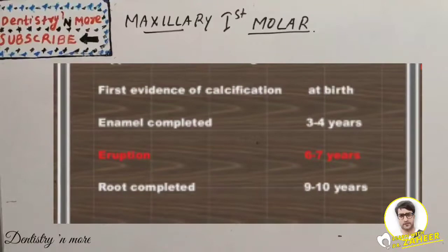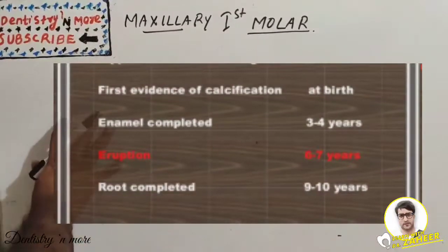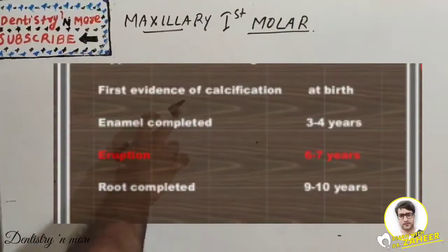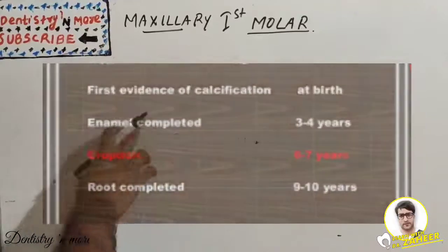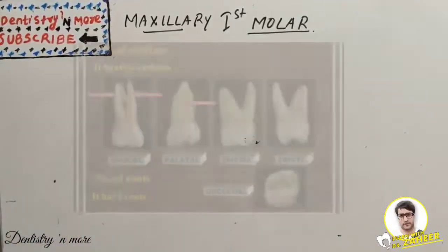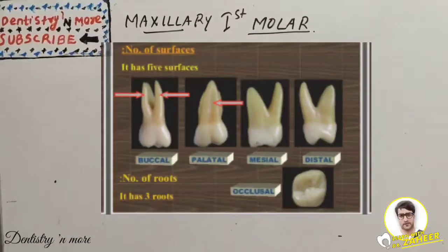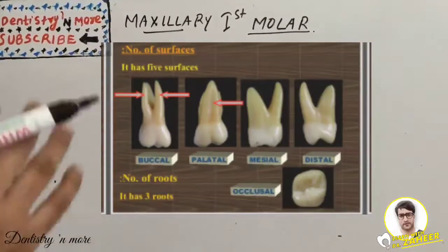Regarding the chronology: the first evidence of calcification is at birth, enamel completion around three to four years, eruption by six to seven years, and root completion by nine to ten years.